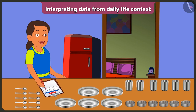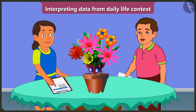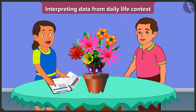Now let's see the second example. Now I will fill this table by counting how many and which color plastic flowers are there in this flower vase. Hey Bubbly, you don't need to count these flowers. Look, I have filled the data about the flowers which are in the flower vase. Thank you, Bunty. I will interpret the data from this table.